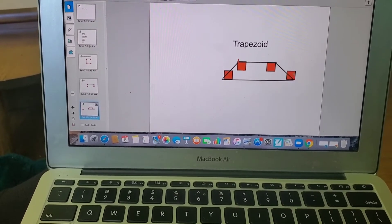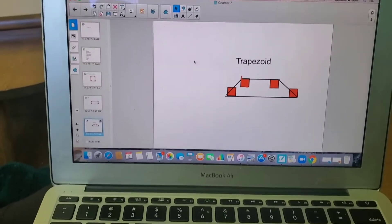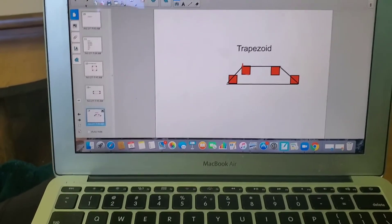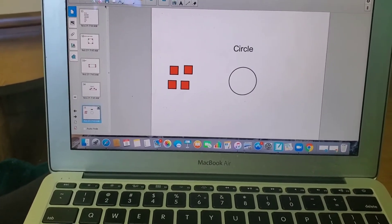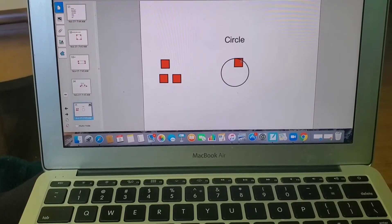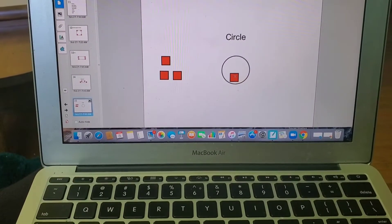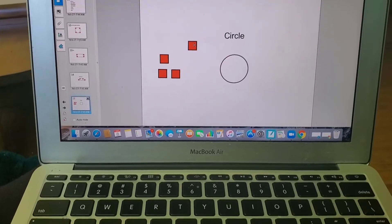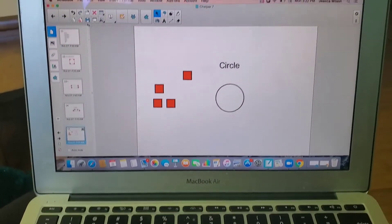That one was a hard one. Now let's look at a circle. Does a circle have square corners? No, it has no corners. I can't put it anywhere.